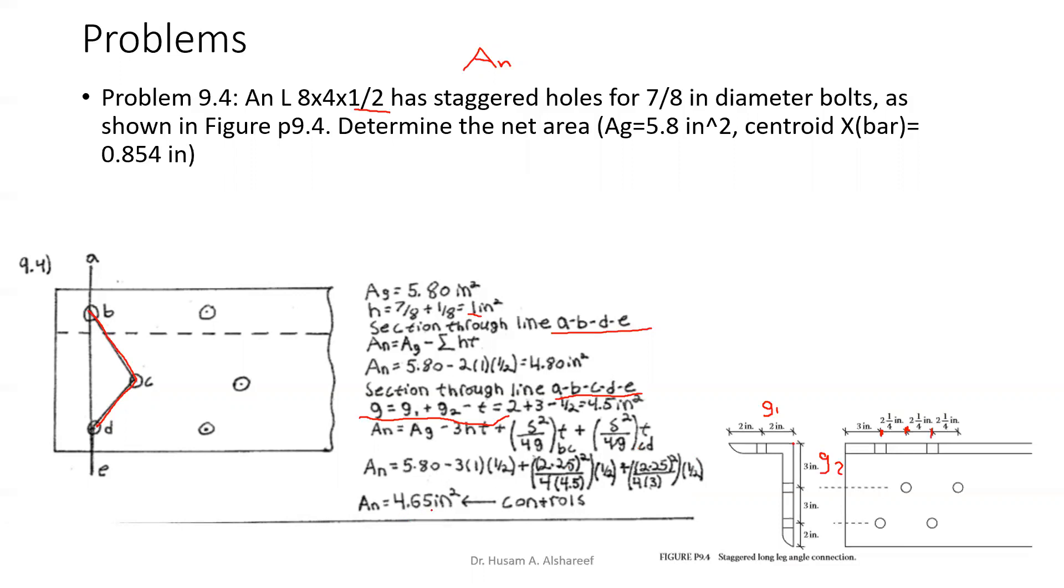It gives us 4.65 in². Now, the second failure scenario or mode, that net area controls over the first one, so this is our value here.